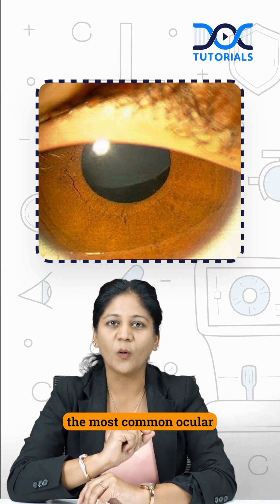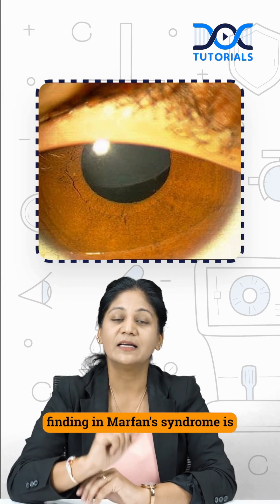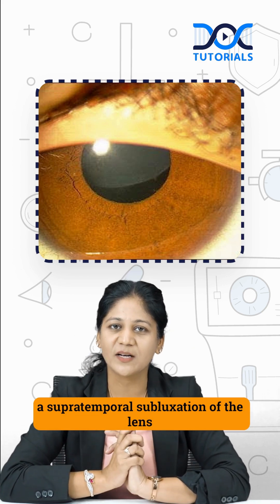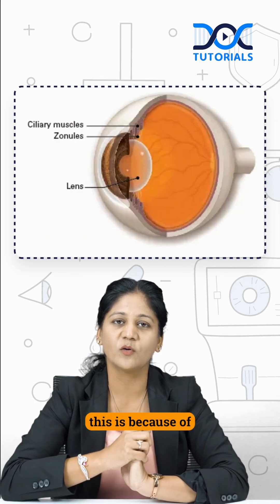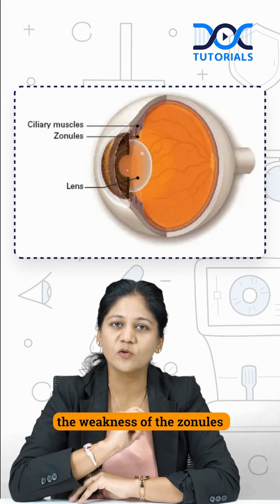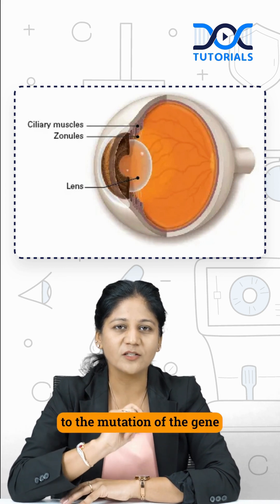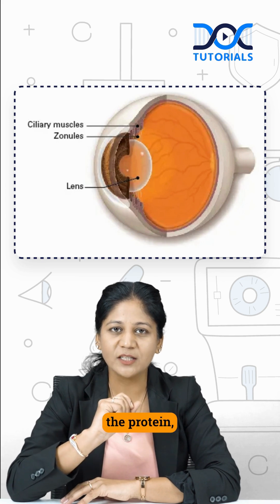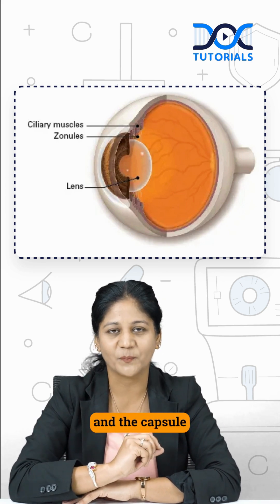The most common ocular finding in Marfan syndrome is that the lens goes up and out — there is a supratemporal subluxation of the lens. This is because of the weakness of the zonules due to the mutation of the gene that codes for fibrillin, the protein which is important in the zonules and the capsule.